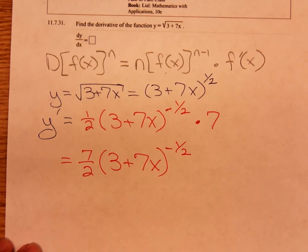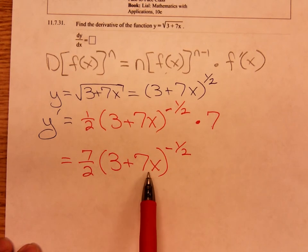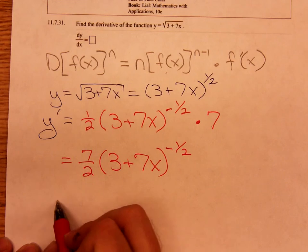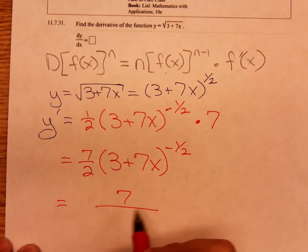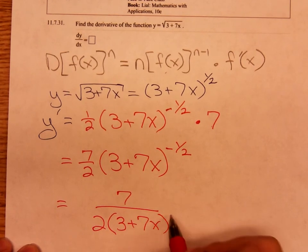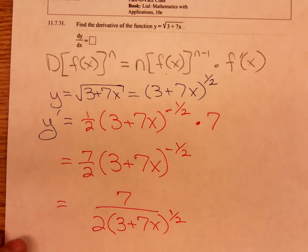Suppose we wanted to write this without a negative exponent. We'd pick the 3 plus 7x up. We'd move it down to the denominator to give us 7 over 2 times 3 plus 7x to the positive one-half in the denominator.